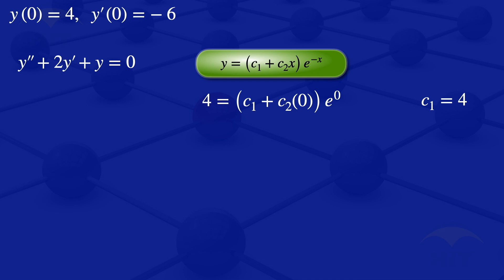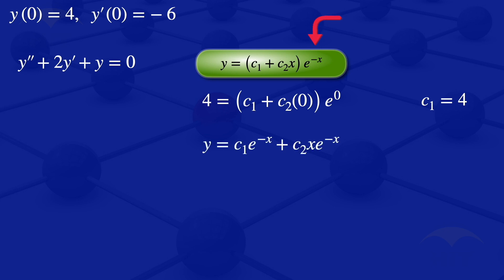For the second condition, y prime(0) equals minus 6. We need to obtain y prime from our general solution. First, expanding the brackets, y equals c1·e^(-x) plus c2·x·e^(-x). Then we differentiate.